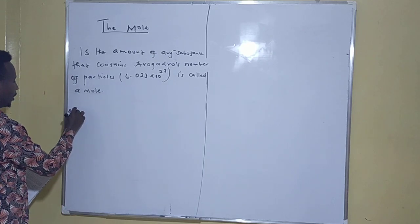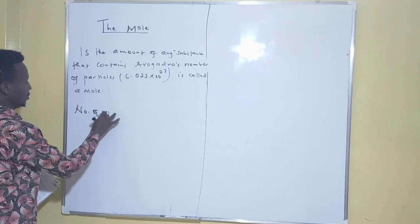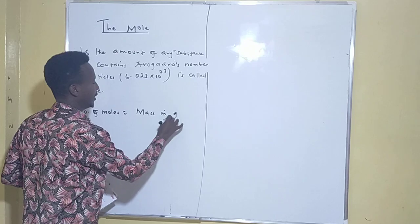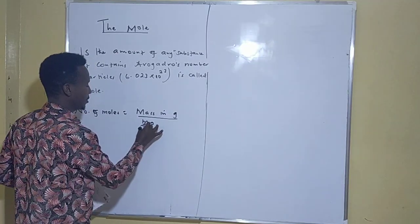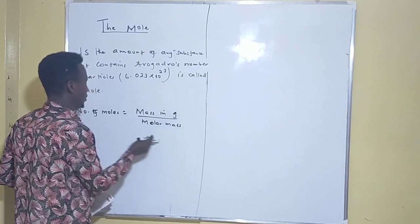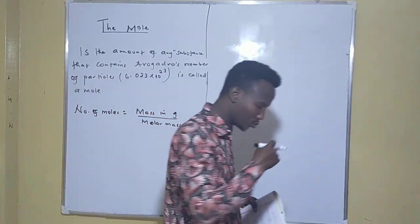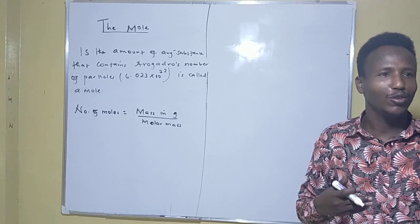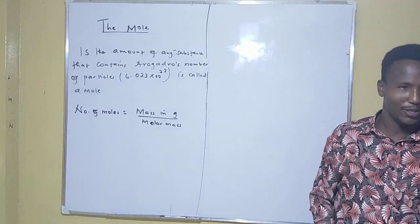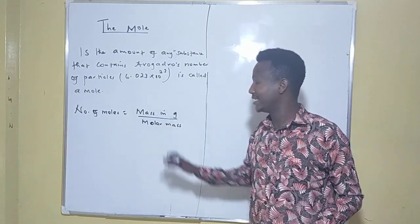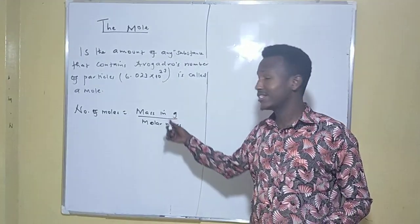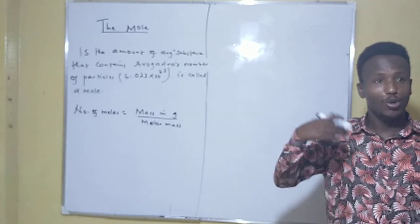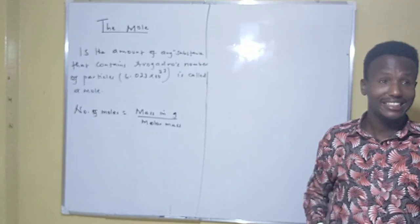We must know what a mole is first. A mole is the amount of any substance that contains Avogadro's number of particles — 6.023 times 10 to the power of 23. That is what you normally call a mole. Now, number of moles is simply mass in grams divided by molar mass.